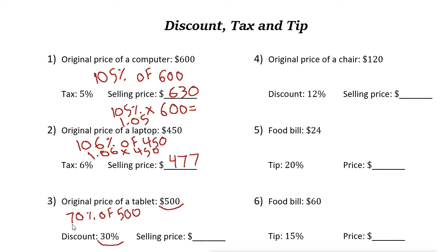Use your calculator: seventy percent is zero point seven, so point seven times five hundred equals three hundred fifty dollars. Alternatively, thirty percent of five hundred is one hundred fifty — subtract it from five hundred and you get three hundred fifty.